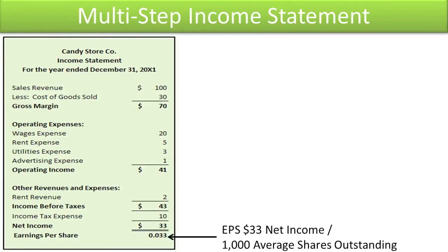The earnings per share (EPS) figure provided at the bottom of the income statement is one of the most important numbers in the financial world and must be disclosed on the income statement of publicly traded companies. It is computed as net income divided by average shares outstanding during the period. In this example, I assume 1,000 shares were outstanding for the whole year — $33 of net income divided by 1,000 average shares outstanding. Investors track this number very closely because it indicates how much profit the business has generated in relation to each share held by its investors, and use it to compute how much they might be willing to pay to invest in a single share.